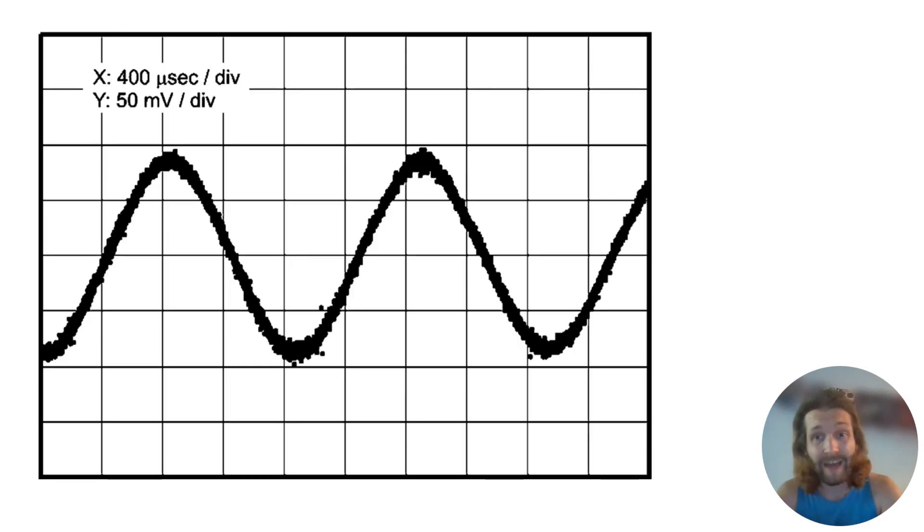Firstly, what is an oscilloscope? An oscilloscope is a device used to visualize and analyze the waveform of electronic signals. It's like a window into the world of electricity, allowing us to see how voltage changes over time.